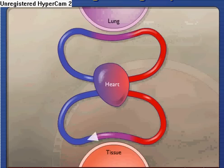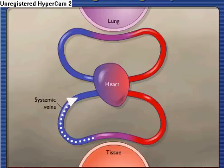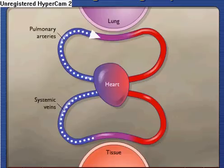Oxygen-poor blood is carried through systemic veins back to the heart and is pumped through pulmonary arteries to the lungs, where gas exchange again replenishes the blood with oxygen and removes carbon dioxide.